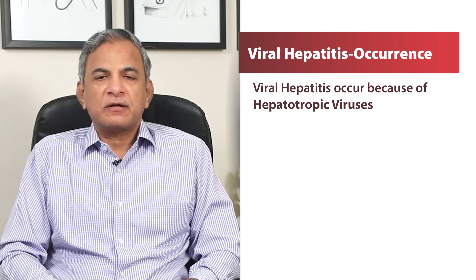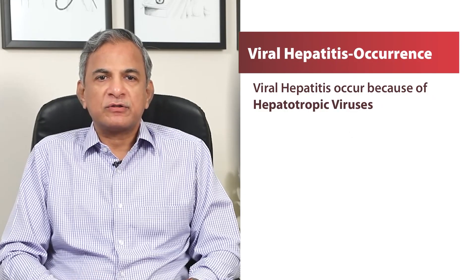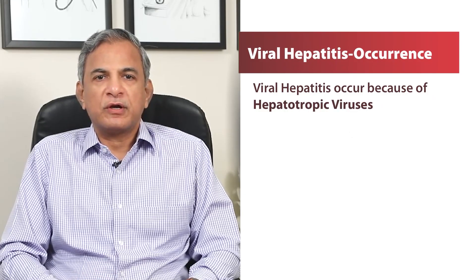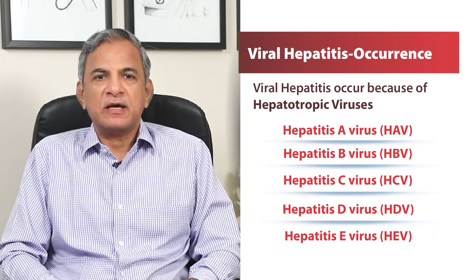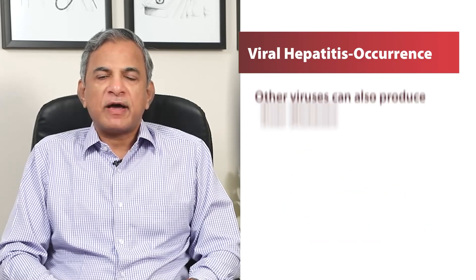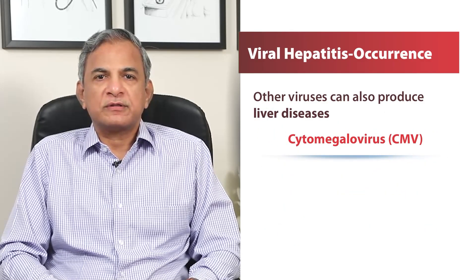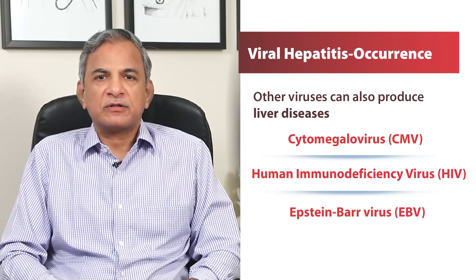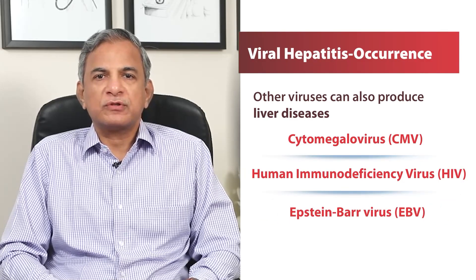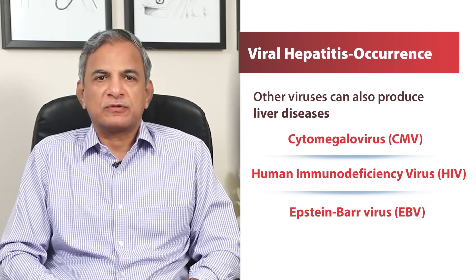Viral Hepatitis can occur because of hepatotropic viruses which include Hepatitis A, B, C, D and E. But other viruses like cytomegaloviruses, HIV virus, and Epstein-Barr virus can also produce liver diseases, though they are like minor infections.